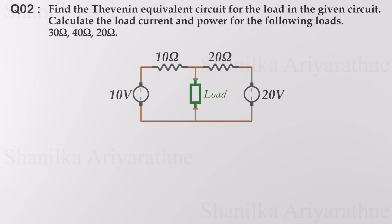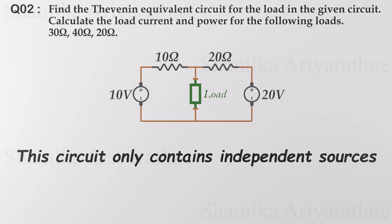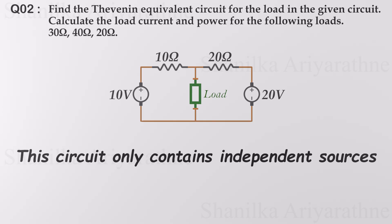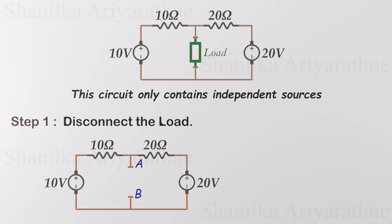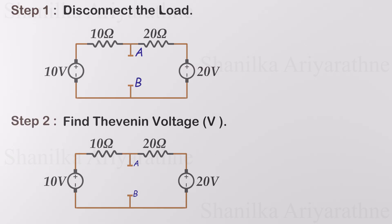Let's try another example. Find the Thevenin equivalent circuit for the load in the given circuit. Calculate the load current and power for the following loads. This circuit only contains independent sources — two voltage sources — so this should be solved under case 1. The first step is disconnecting the load: remove the load resistance and keep nodes A and B disconnected. Now we can calculate the voltage across nodes A and B. This is the Thevenin voltage.